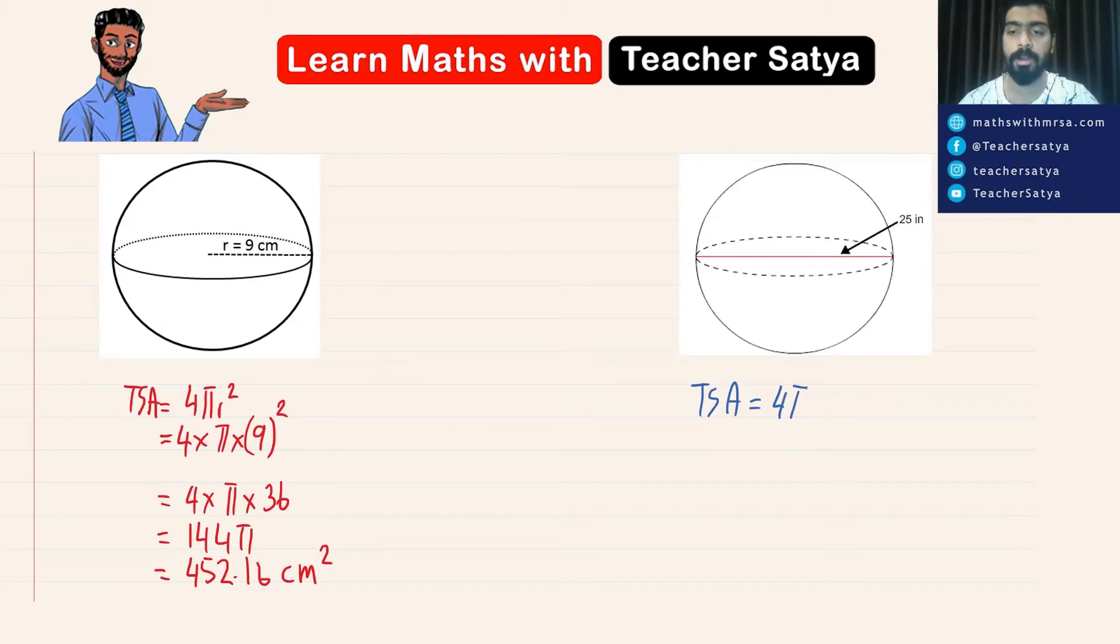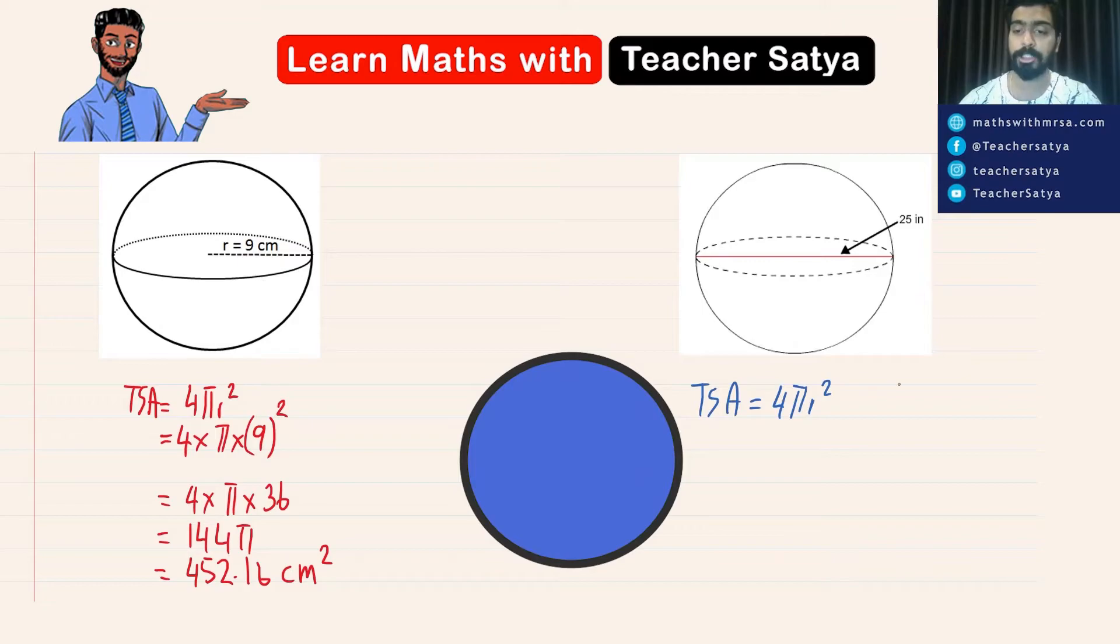The surface area is 4πr². But in this question, the diameter is 2 times its radius, or in other words the radius is half of its diameter. So in this question the radius would be equal to 25 over 2, which is equal to 12.5 inches.